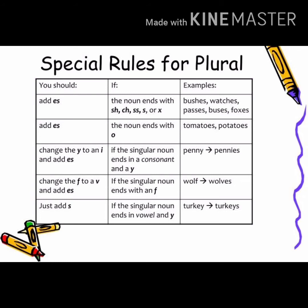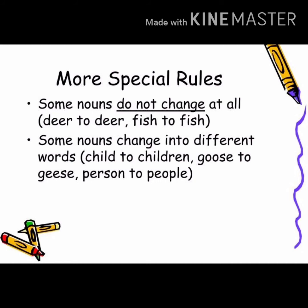We also add 'es' if the noun ends with 'o.' If the singular noun ends with 'f,' a different rule applies. If the noun ends with a vowel or 'y,' then you simply add 's' — for example, turkey becomes turkeys. Some nouns do not change at all — for example, deer stays deer, and fish stays fish, even in plural.